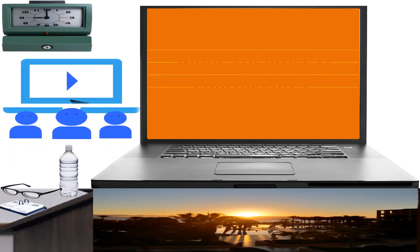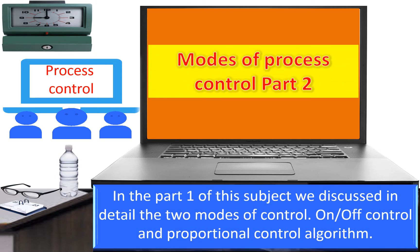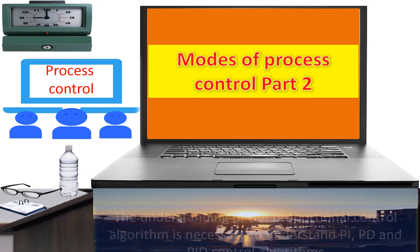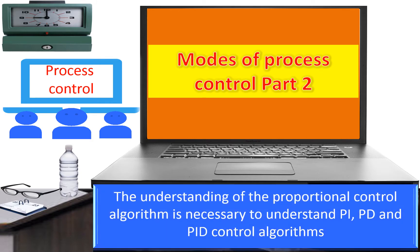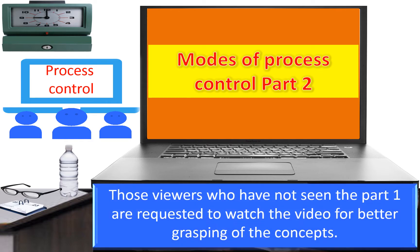In Part 1 of this subject, we discussed in detail two modes of process control: On-Off Control and Proportional Control Algorithm. The understanding of the Proportional Control Algorithm is necessary to learn and understand the other modes of control, namely PI, PD, and PID control algorithm. Those viewers who have not seen Part 1 are requested to watch that video for better grasping of the concepts.